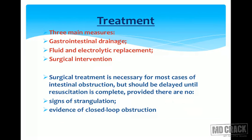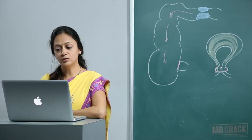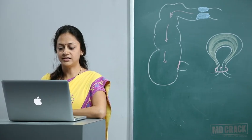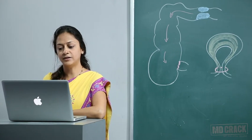Treatment of obstruction involves three measures: first, gastrointestinal drainage; second, fluid and electrolyte replacement; and third, surgical intervention. Surgical treatment is necessary for most cases but should be delayed until resuscitation is complete, provided there is no sign of strangulation and no evidence of closed loop obstruction. In obstruction secondary to adhesions, conservative management may be continued for up to 72 hours in the hope of spontaneous resolution. When the site of obstruction is unknown, adequate exposure is best achieved by midline incision. Operative assessment is directed to the site, nature of obstruction, and viability of the gut.